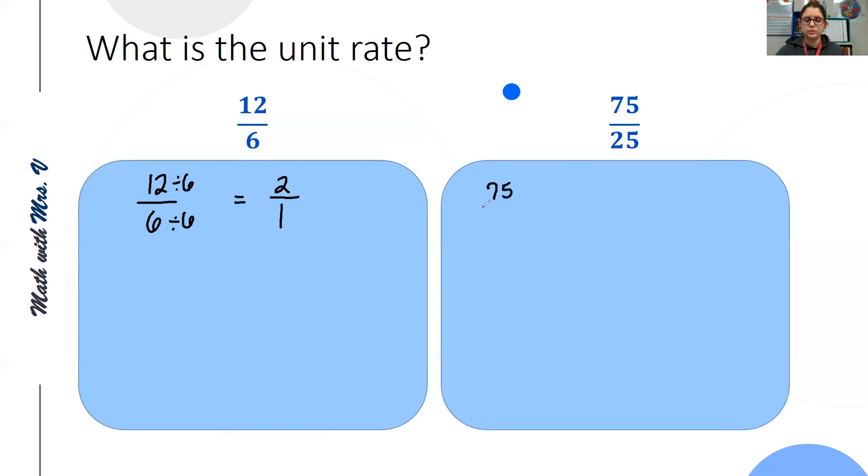75 over 25. We're looking for a denominator of one. We would divide 25 by 25 to get one. So 75 divided by 25 gives us 3.